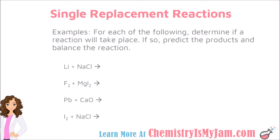Let's look at an example of a single replacement reaction and predict the products. Starting with the top one, I can see where lithium is reacting with sodium chloride. I recognize this as a single replacement reaction because I have an element by itself reacting with a compound, so this element is trying to replace a single element within this compound. In this case, lithium is a metal, so lithium is going to try to replace the metal in the compound — lithium is trying to replace sodium. When lithium replaces sodium, lithium is now paired with chlorine.